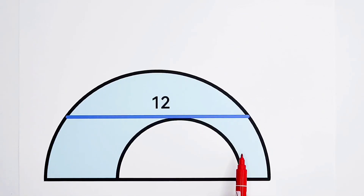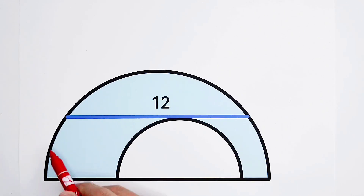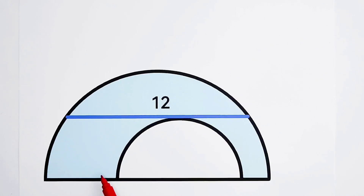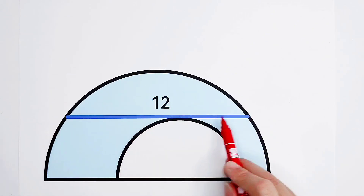This is a fantastic geometry question. How can we express the area of the shaded region? Complicated? No, easy. The only thing which is complicated is that only one condition is given.